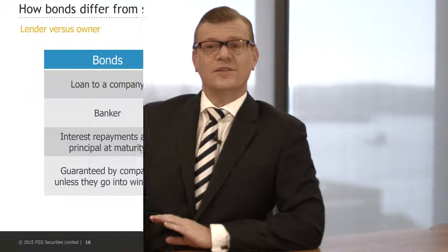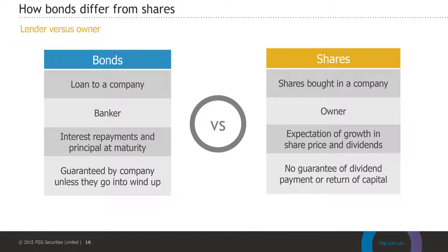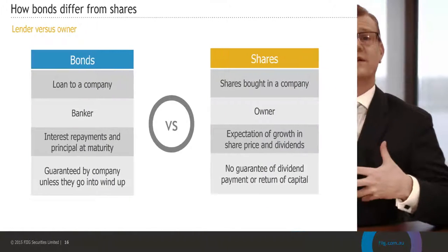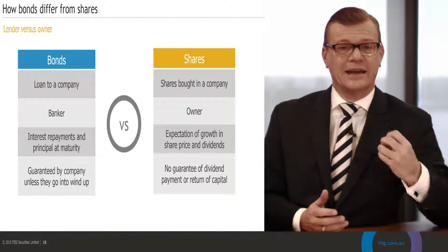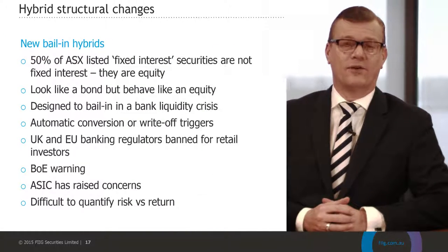Let's take a look at bonds and fixed income in a little bit more detail. As a shareholder, you're essentially a part owner in a business. You benefit from growth in the company and from dividend payments should they be paid, but there's no certainty of outcome — you don't know what your performance will be. As a bondholder, you're a lender, essentially the banker to that company, and so you're afforded additional protections such as guaranteed coupon payments and a guaranteed maturity date of your investment.